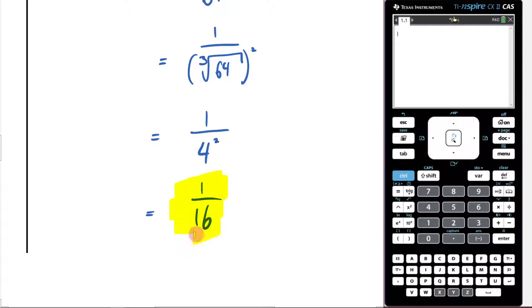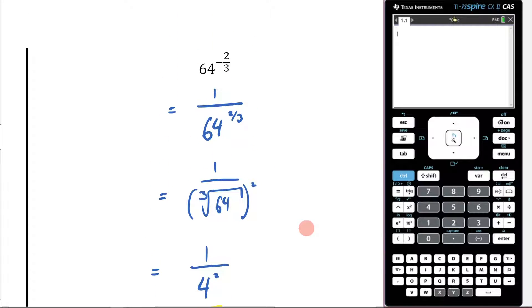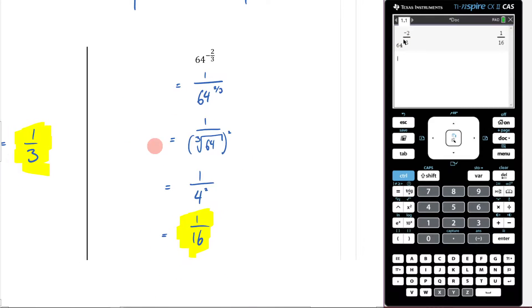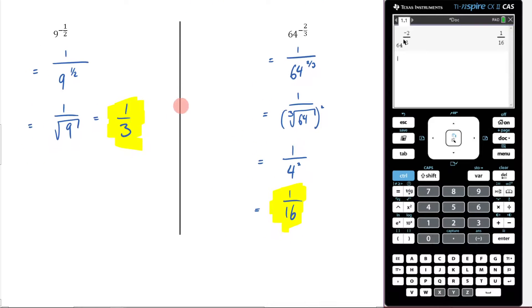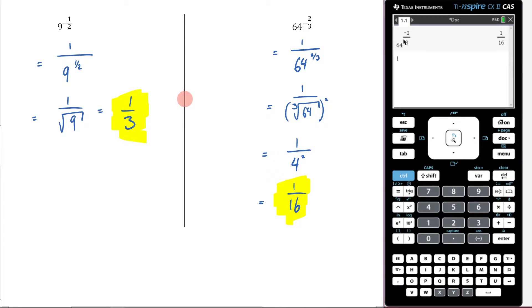Again, make sure you can type this into the CAS, so nothing too crazy here. We're just going to come here, and we're going to type in 64 raised to negative 2 thirds. The answer is 1 on 16. Perfect. Make sure you can do it on your CAS, make sure you can do it by hand, make sure it makes sense, and if it does make sense, make sure you're reaching out to your teacher.